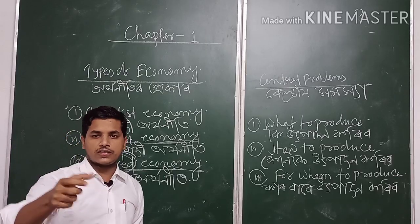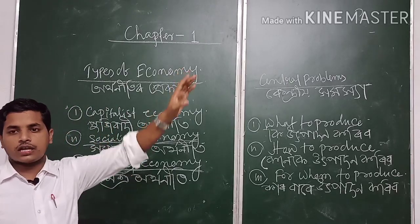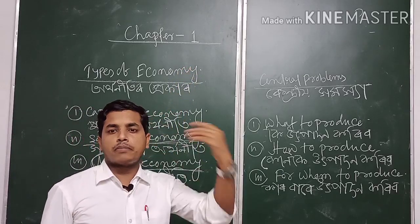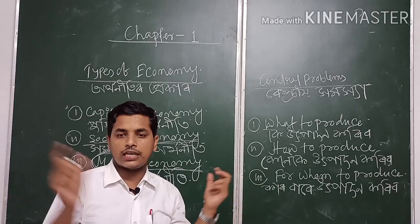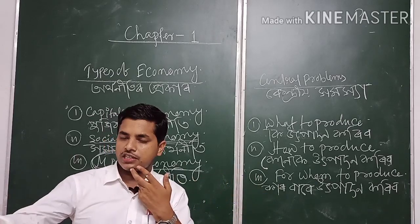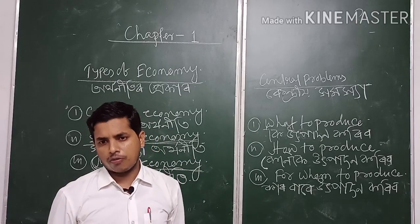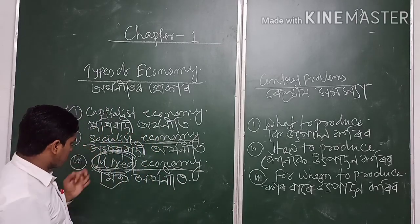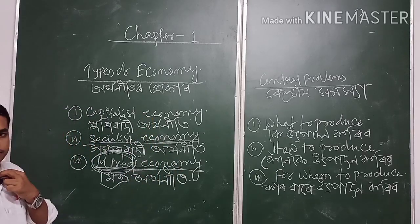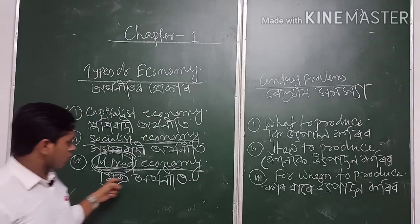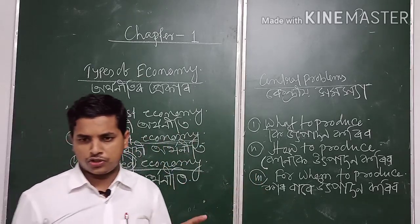In mixed economy, both public and private sector control business as well as the economy. For example, India, Pakistan, and Bangladesh are some mixed economy countries. In India there is both private sector as well as public sector, so some decisions are taken by the private sector and some by the government sector. So mixed economy is a mixture of both capitalist and socialist economy.